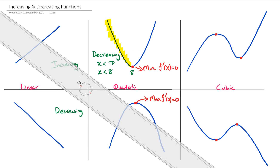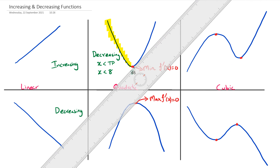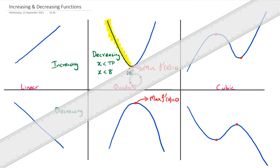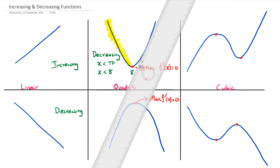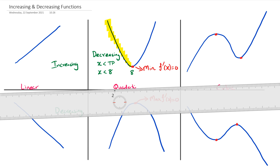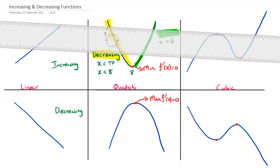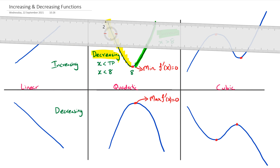Now going to the other side of 8, we can see that the ruler is actually pointing up, so that means everything on this side is now increasing. So in this case we say that when x is greater than 8 the function is increasing, and when it's before 8 the function is decreasing.